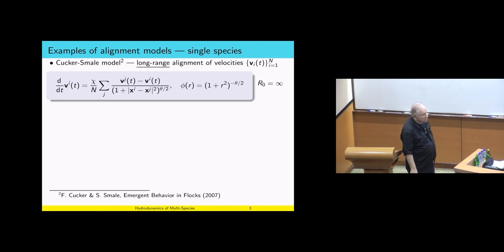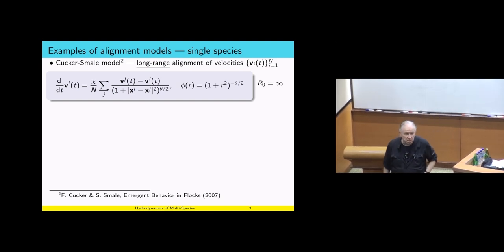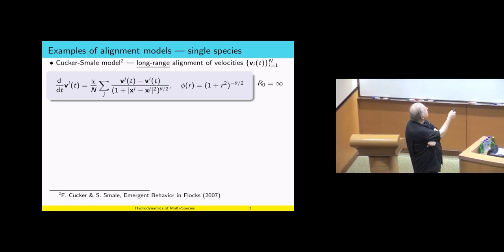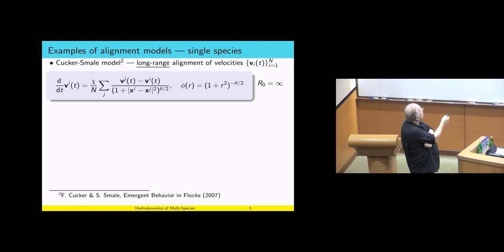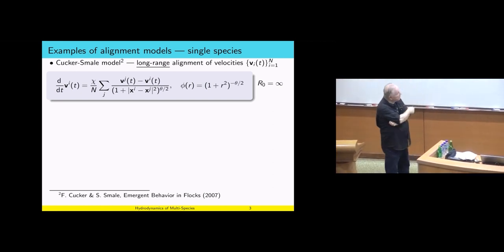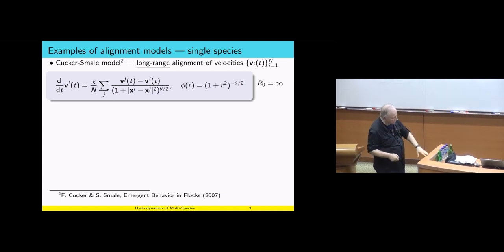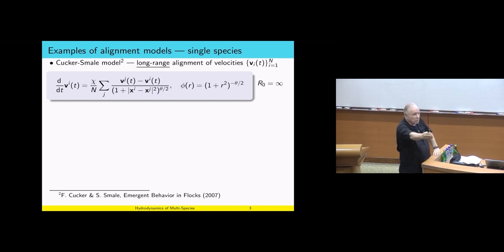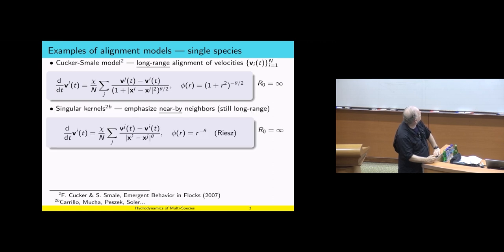We need to discuss the canonical examples for communication kernels. I will assume they are decreasing. The canonical example goes back to Cucker and Smale. It's a function of the distance, and it decreases as theta over 2 — this is what I called before the pre-factor eta. This is a phenomenological example for a decreasing communication kernel. The reason it decreases is because it reflects the common wisdom that the further you are, the strength of communication decays.